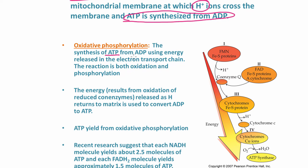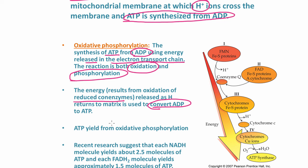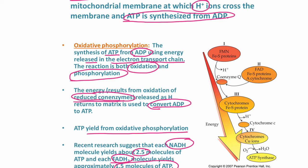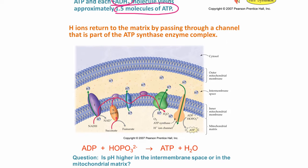Oxidative phosphorylation is the synthesis of ATP from ADP using energy released in the electron transport chain. The reaction involves both an oxidation and a phosphorylation. The energy released from the oxidation of the reduced coenzymes drives the hydrogen ions back into the matrix to convert ADP to ATP. Recent research suggests each NADH molecule yields about 2.5 molecules of ATP, and each FADH2 molecule yields approximately 1.5 molecules of ATP.